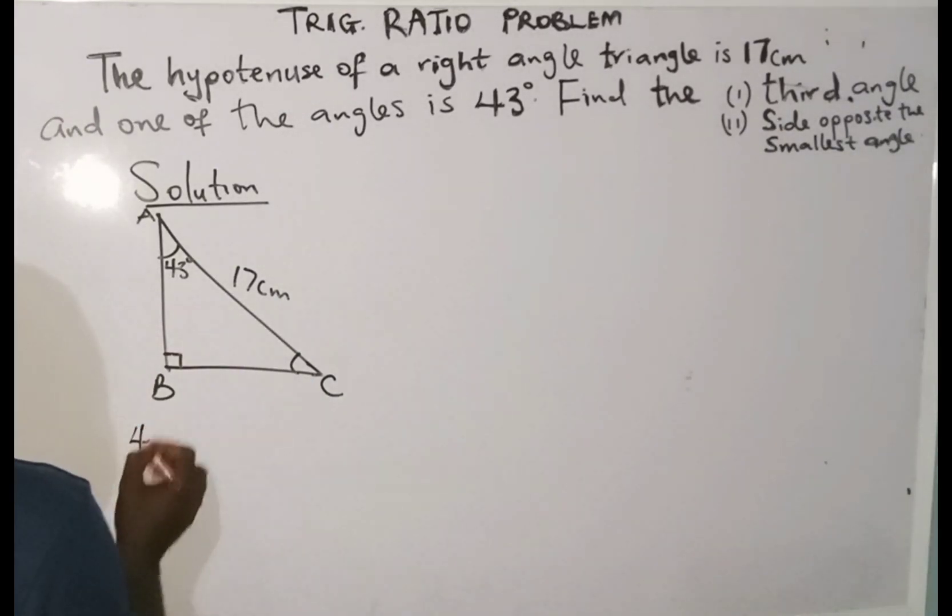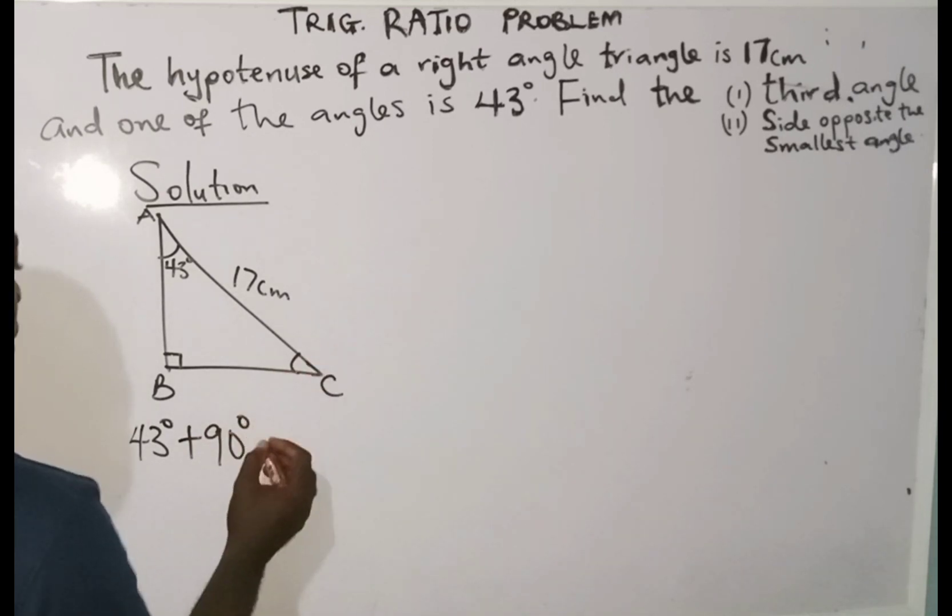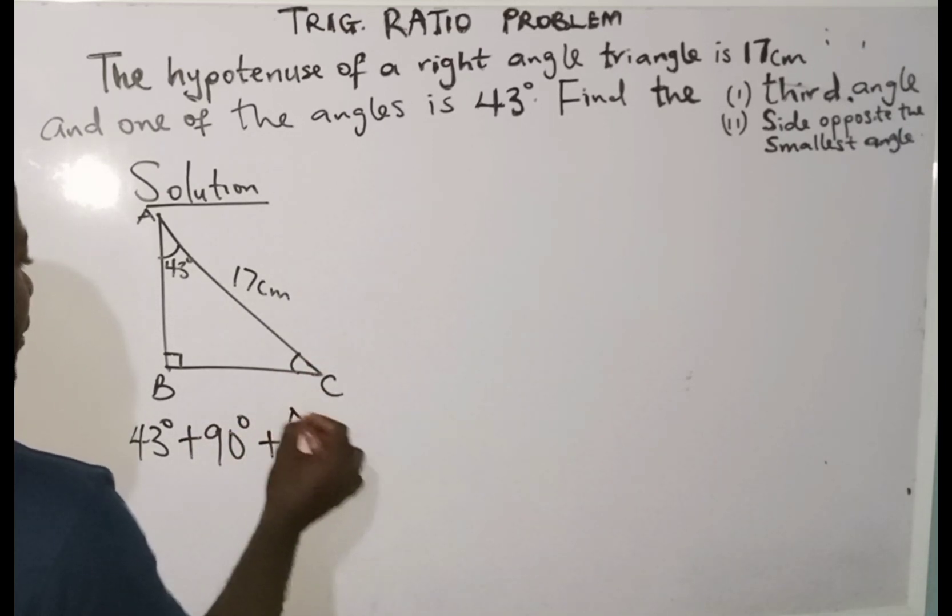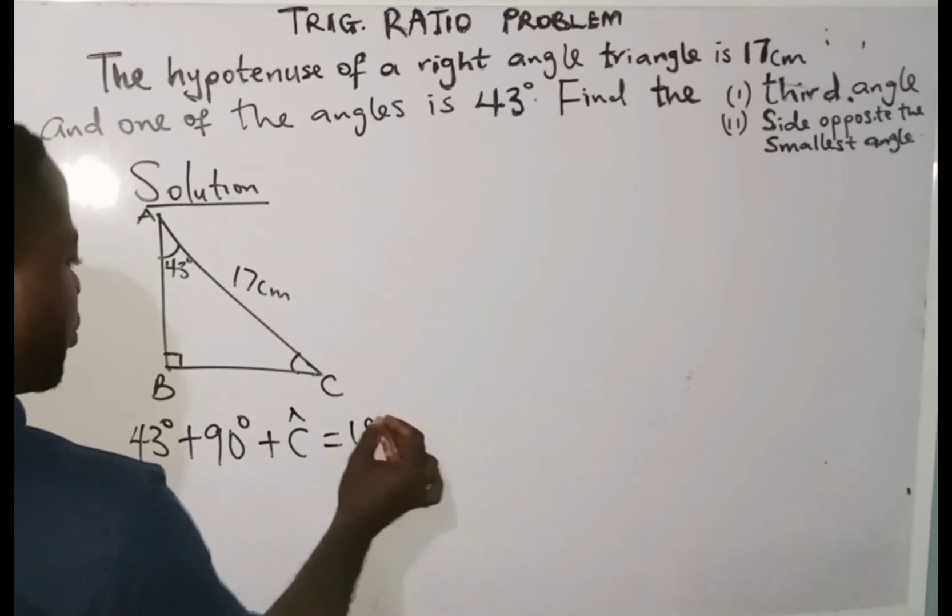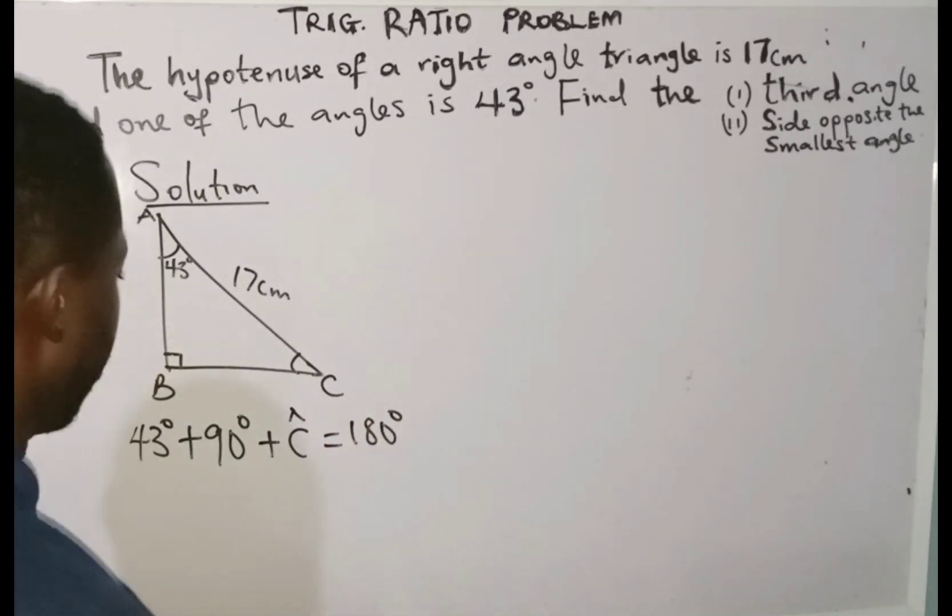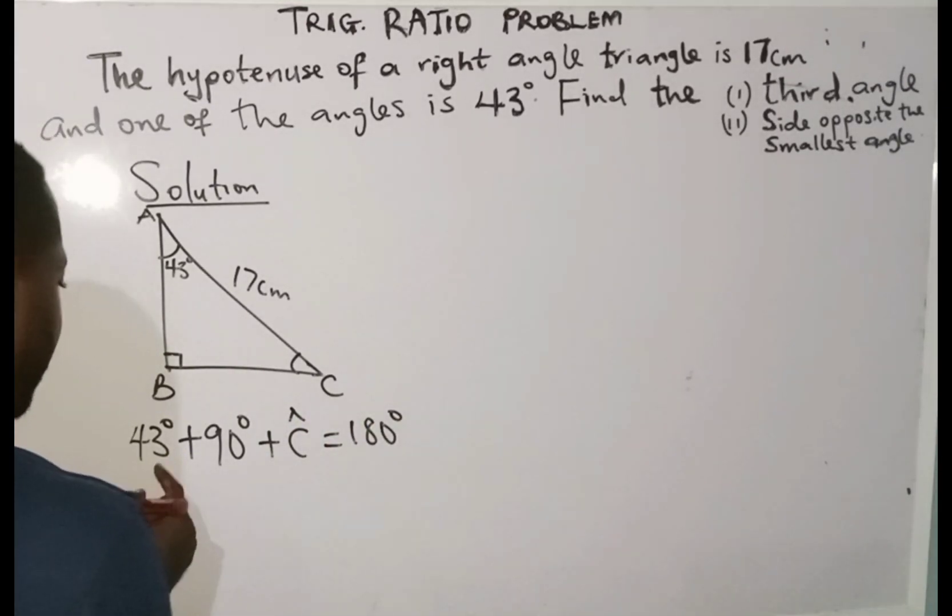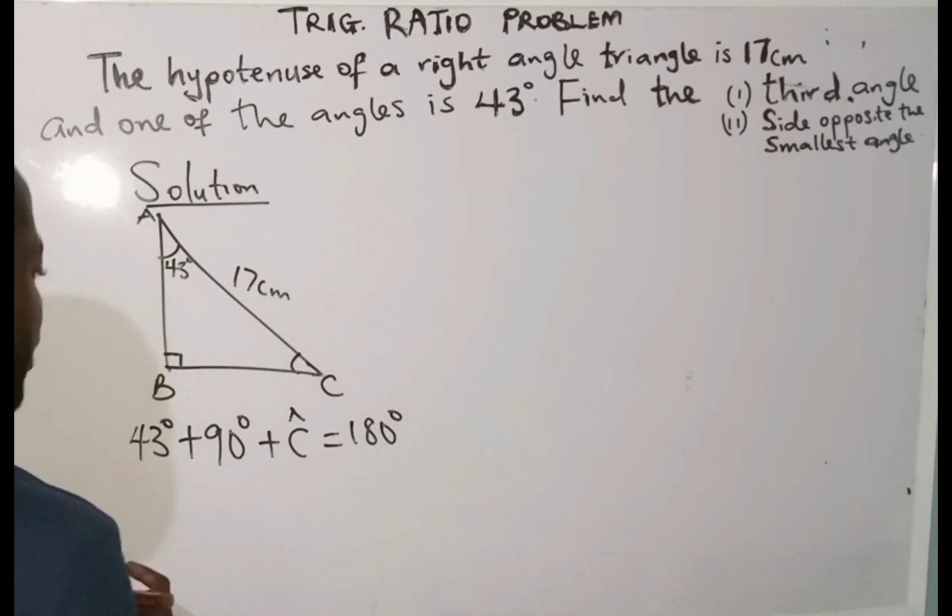The first one is going to be 43 degrees plus 90 degrees plus the unknown angle, and we'll see that everything is equal to 180 degrees. I'm going to say 43 plus 90, that is 133 degrees.